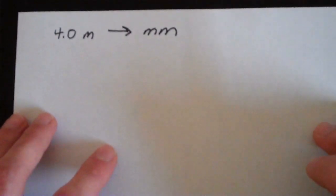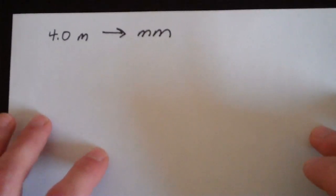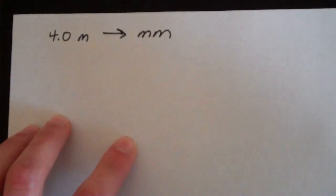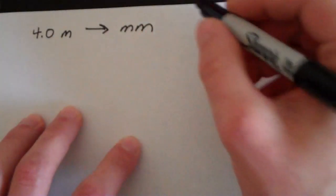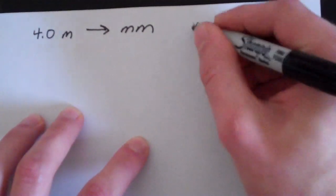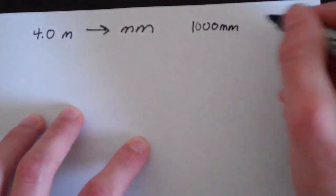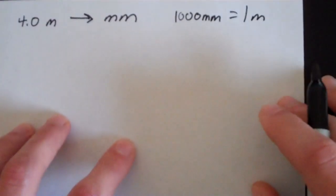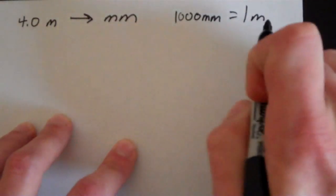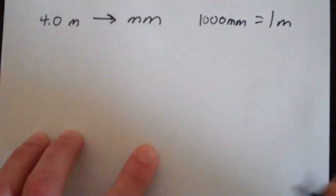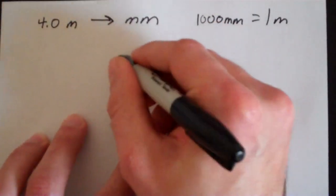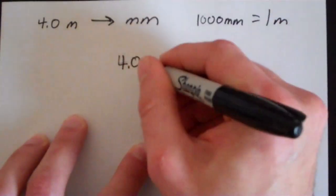So let's go through some examples. We have 4.0 meters and we want to convert that to millimeters. Well, we know that 1000 millimeters equals 1 meter. So that'll help us. Those are equivalent quantities so we can put that into a conversion factor. So we start out with 4.0 meters.